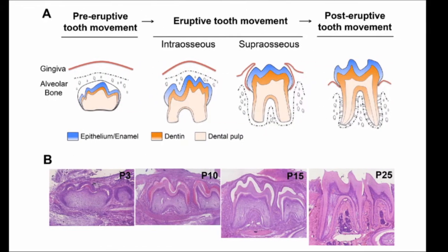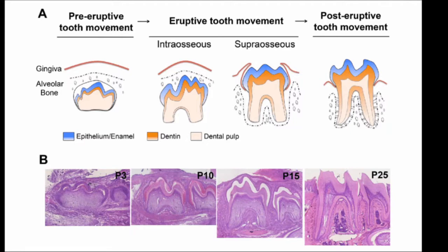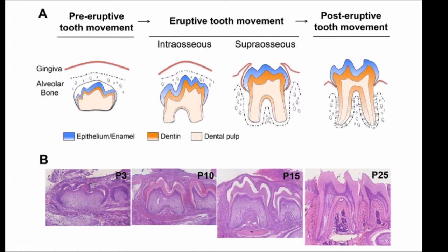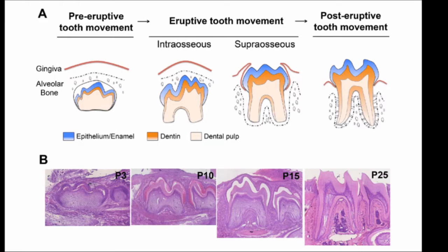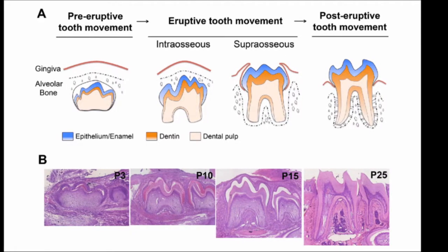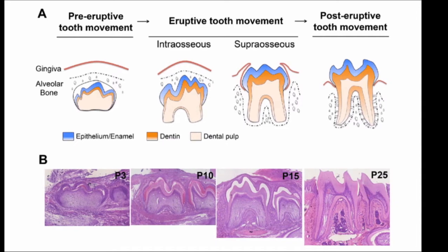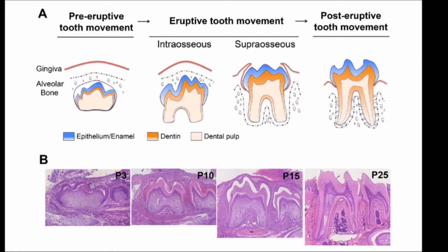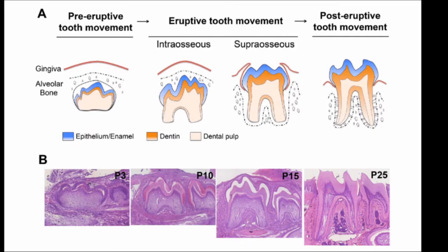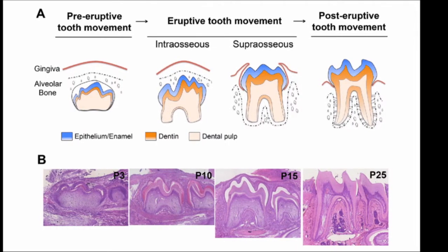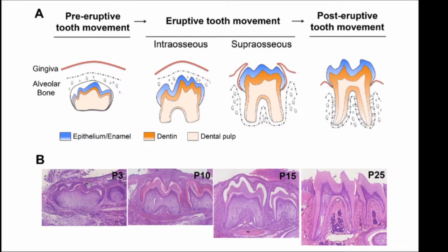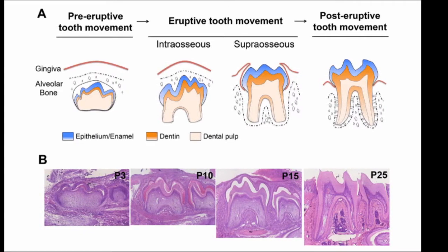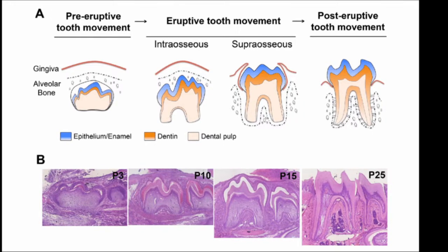The second phase is the eruptive tooth movement phase. In this phase, the erupting tooth moves from its position inside the jaw to the functional position of occlusion inside the oral cavity. The movements made in this phase are very crucial. This phase comprises both intraosseous and extraosseous movements. In this phase, root formation begins, and as soon as root formation begins, the formation of the periodontal ligament also begins.